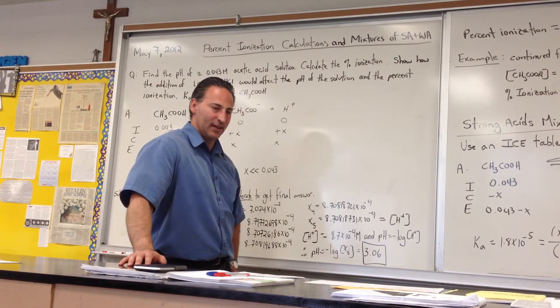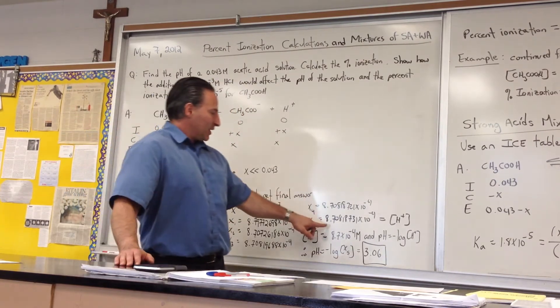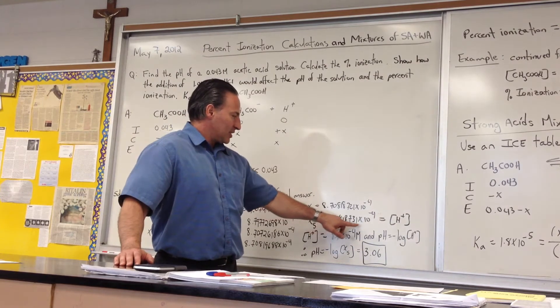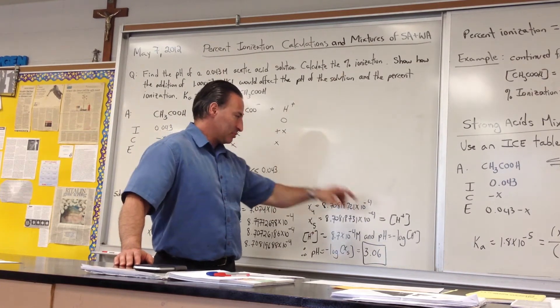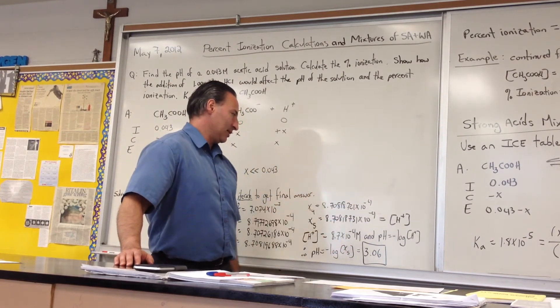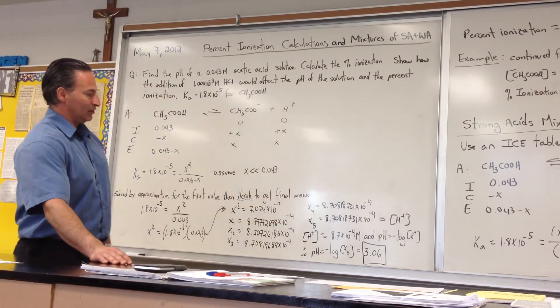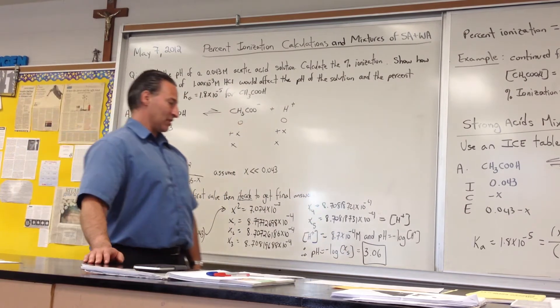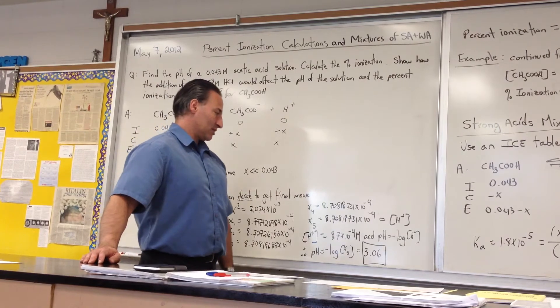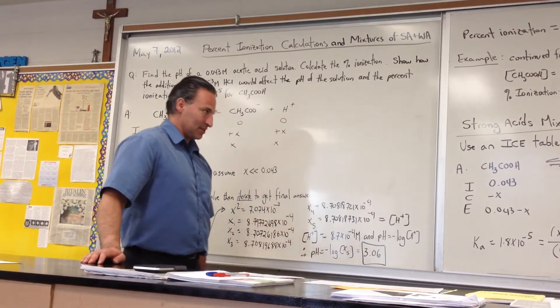At the fifth iteration, we get 8.708×10⁻⁴ for our final H⁺ concentration. We calculate the pH by entering it into the pH equation: pH equals the negative log of the concentration of H⁺. We get 3.06 as the pH of the result.